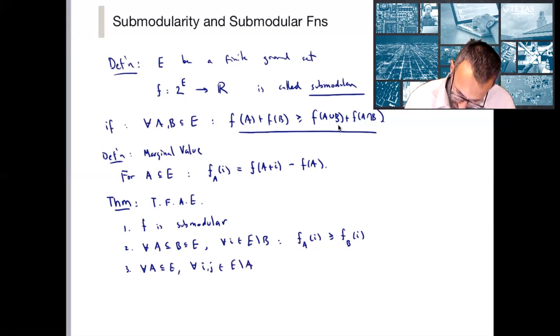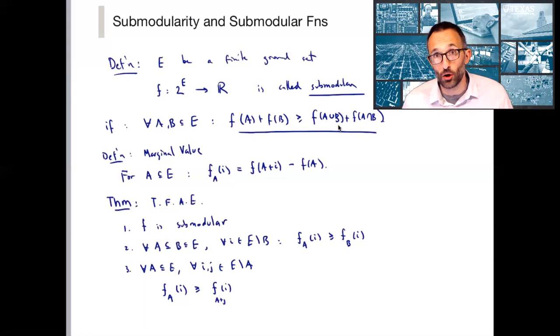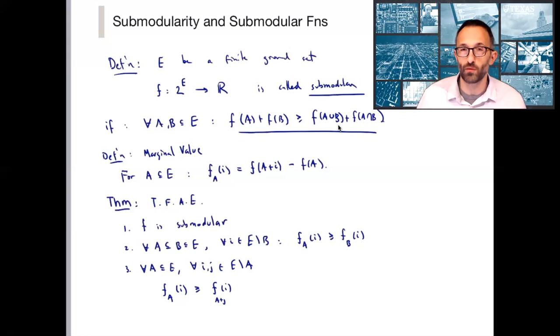then the marginal value of i with respect to A is greater than or equal to the marginal value of i with respect to the one element larger set A plus j. So clearly 2 implies 3. But in fact, this theorem says that all of these are equivalent definitions.